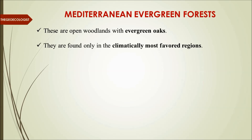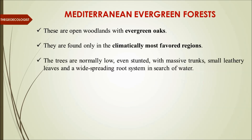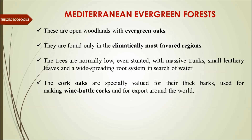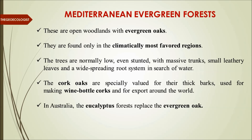These trees are normally low and stunted with massive trunks and leathery leaves — adaptations for water balance — and wide-spreading roots to search for water during dry summers. Cork oaks are very famous, specially valued for their thick bark used for making wine bottle corks. In Australia, eucalyptus dominates as part of the evergreen forest type. Giant redwood is typical of California — very large evergreen trees. This is the composition of Mediterranean evergreen forests.